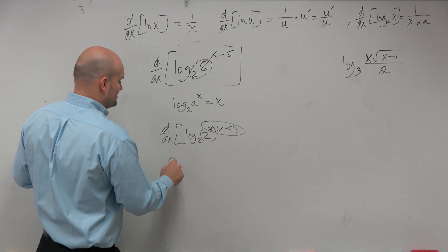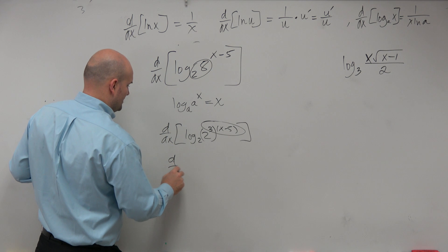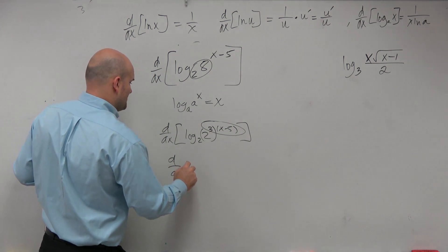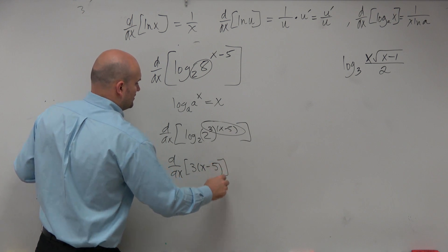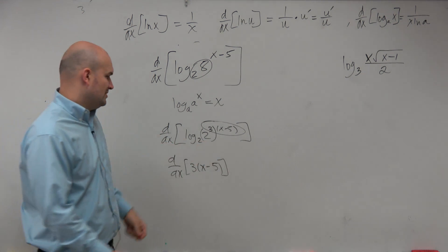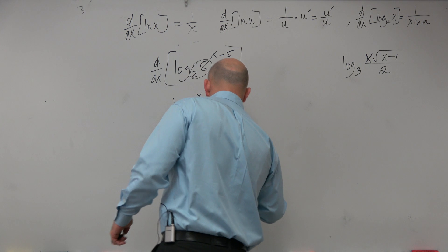So therefore, really what I'm taking the derivative of is d over dx is 3 times x minus 5, which you could distribute that through. But either way, you guys would see that the answer is just equal to 3.